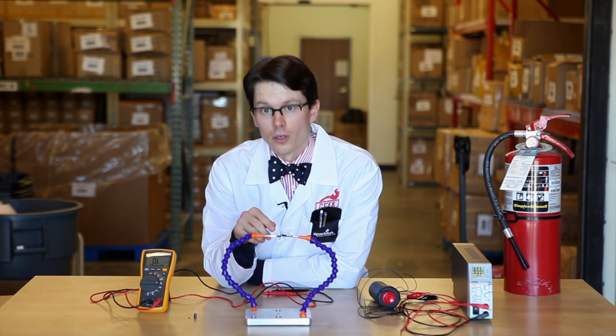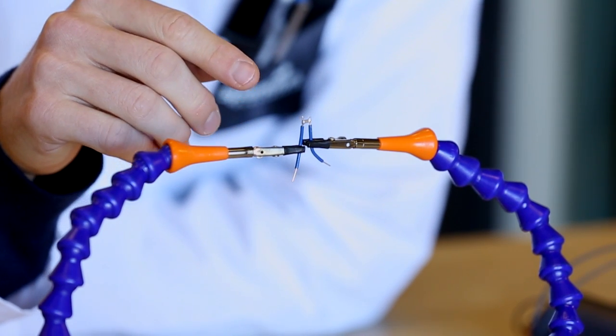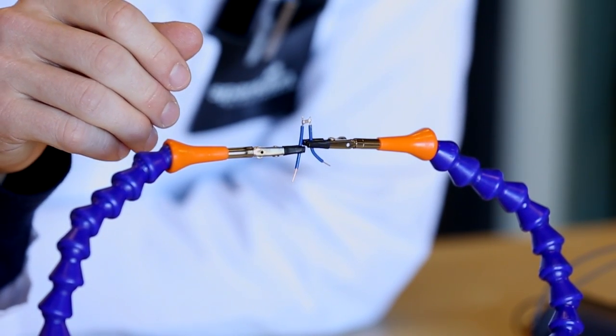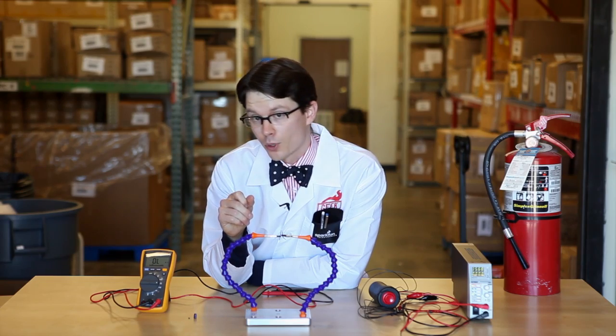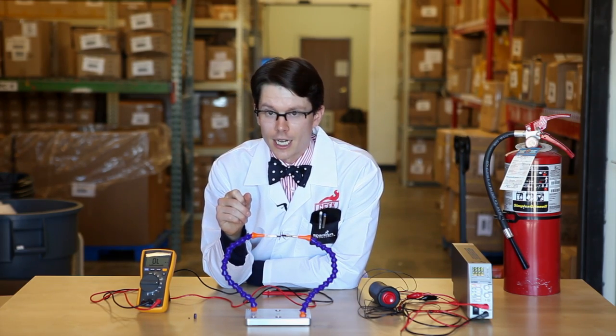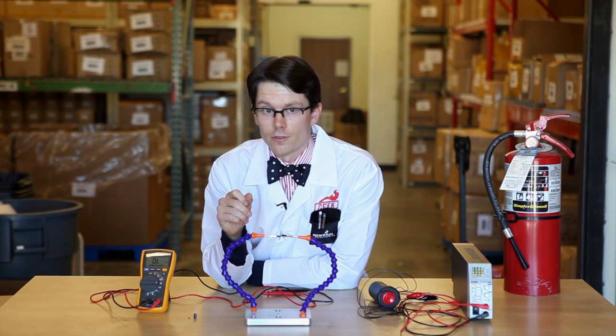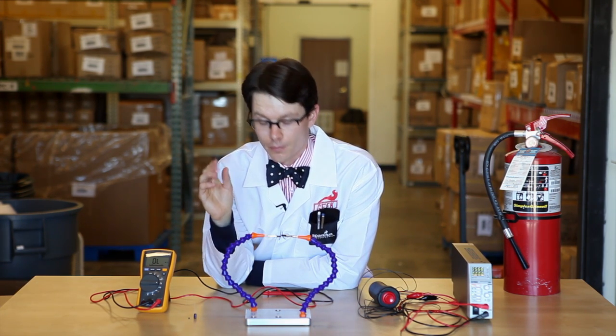So one of the capacitors that we exploded is the ceramic right here, and they're fairly common. You can find them in almost anything, and they have fairly low capacitances. They're pretty reliable though, which means that they can tolerate pretty high voltage spikes, and you can find them at 6.3 volts, 10 volts, 16 volts, all the way up to 50 volts and beyond.